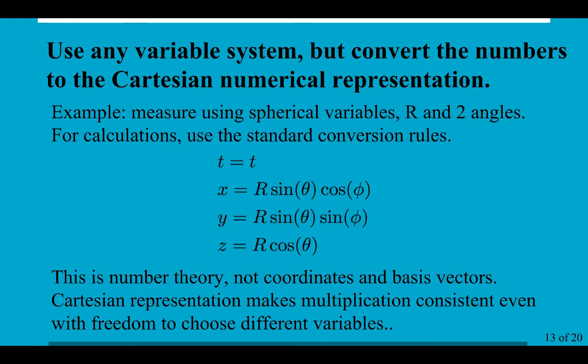You can use any variable system you'd like. Just convert it to the Cartesian numerical representation when you want to multiply things together. So, for example, in spherical coordinates you have R and a couple of angles. And so, we know this rule for calculating X, Y, and Z. And just use it. And so, this is really a power grab because post 1915 where differential geometry just took over, I'm proposing that number theory maybe pull back the power and stick in this Cartesian thing. Go ahead and use whatever coordinate system you want. Just know how to get to Cartesian and then use that.